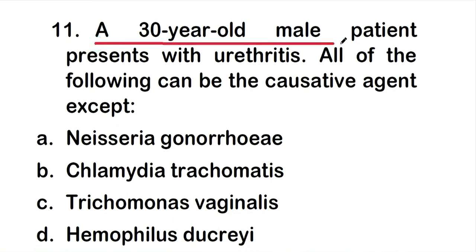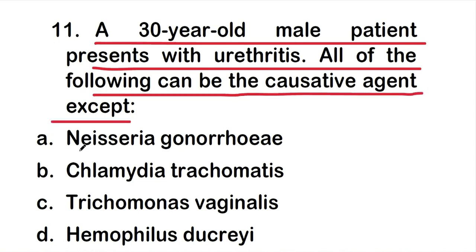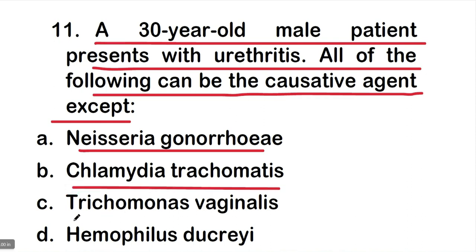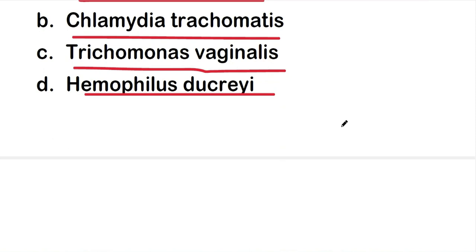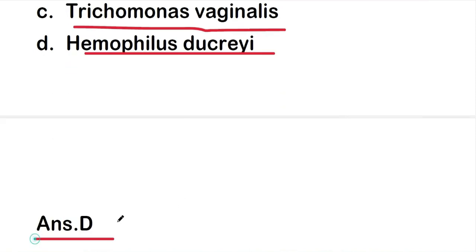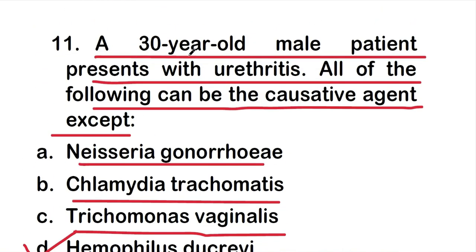Question 11: A 30-year-old male patient presents with urethritis. All of the following can be causative agents except — Neisseria gonorrhoeae, Chlamydia trachomatis, Trichomonas vaginalis, or Haemophilus ducreyi? The right answer is option D: Haemophilus ducreyi. Haemophilus ducreyi is not a causative agent of urethritis.